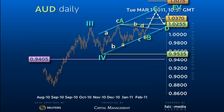Possibly a larger C equals A objective of 1.0520, before another whipsaw reaction back to wedge support, currently at 1.00. Only a loss of this level reverts to consolidation with 98.05 and 96.70 before new highs.